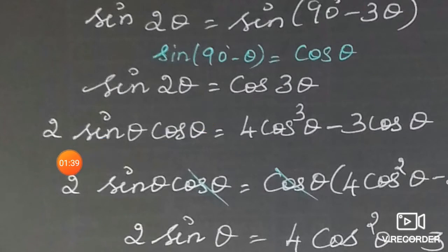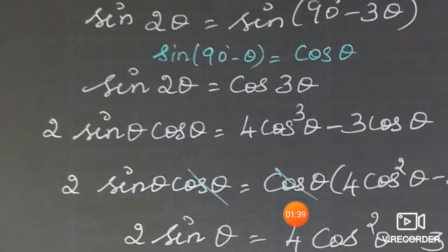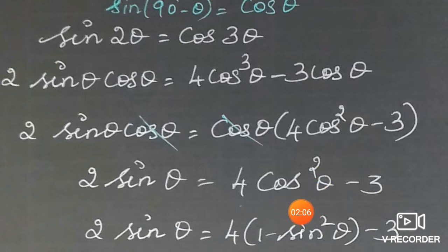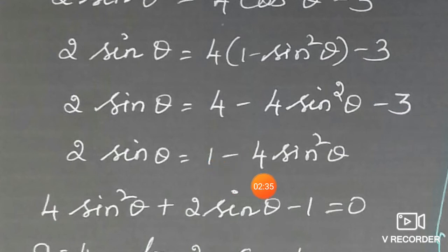Apply the double angle identity: sin 2A = 2 sin A cos A, giving 2 sin θ cos θ. Apply the triple angle identity: cos 3A = 4cos³A − 3cos A, giving 4cos³θ − 3cos θ. Factor out cos θ on the right: cos θ(4cos²θ − 3). Cancel cos θ from both sides. We have 2 sin θ = 4cos²θ − 3. Now substitute cos²θ = 1 − sin²θ, giving 2 sin θ = 4(1 − sin²θ) − 3 = 4 − 4sin²θ − 3 = 1 − 4sin²θ.